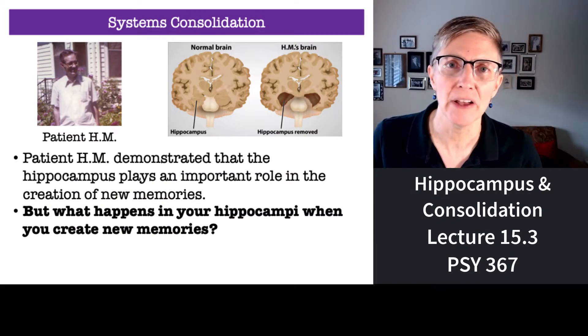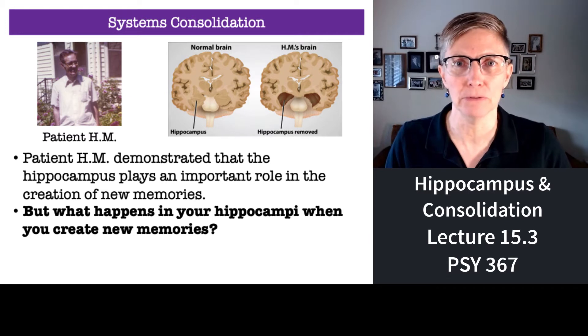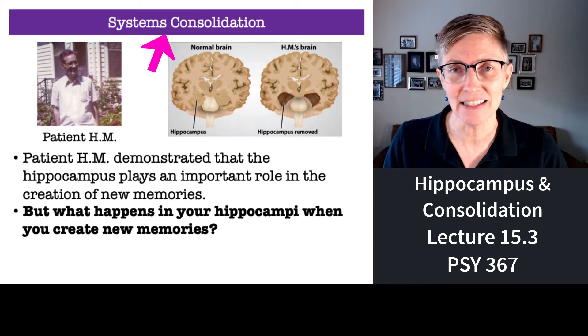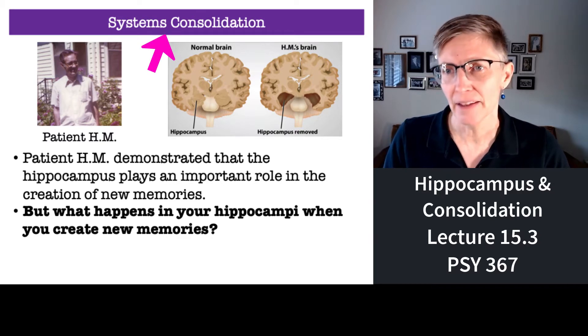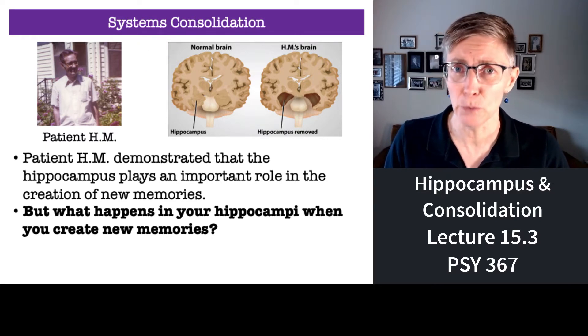In the previous video, we talked about synaptic consolidation — what happens in your synapses as you learn something new. Now we're going to talk about the slower, larger-scale type of rewiring that occurs in your brain when you learn something new, and that's called systems consolidation. I've got a picture here of patient H.M.